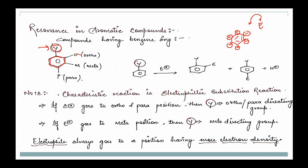Because we know that benzene has electron density, and this group will attract our electrons. Where you don't have a negative charge, the electrophile will not attack there. So if our groups direct attacks to ortho and para positions, we call them ortho-para directing groups. If our attack happens at the meta position, we call it a meta-directing group. The question is: how do we identify whether the electrophile will go ortho-para or meta? I am going to discuss that today — I will tell you how we will analyze the groups.